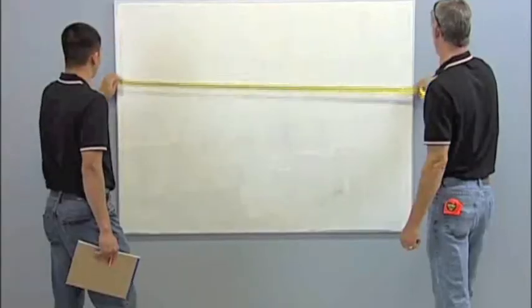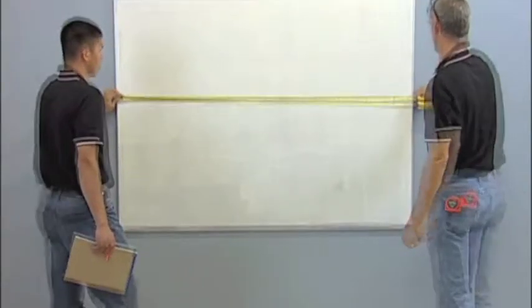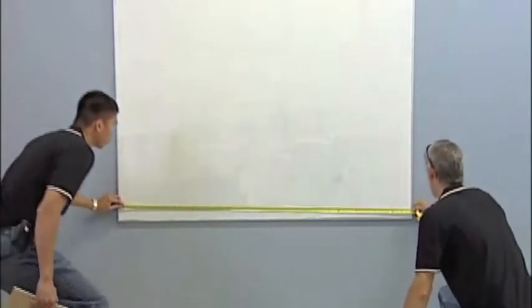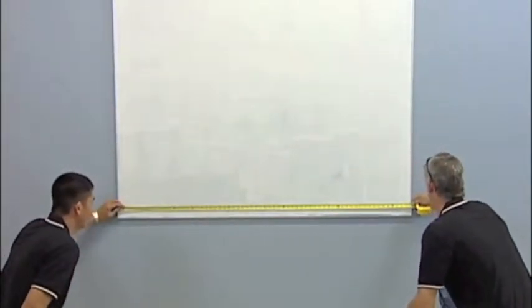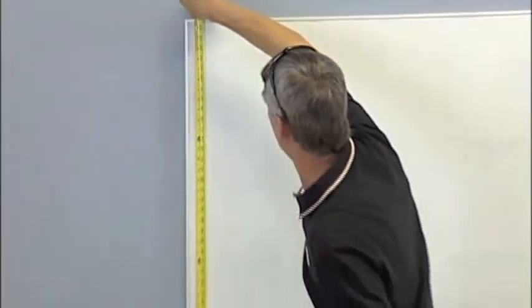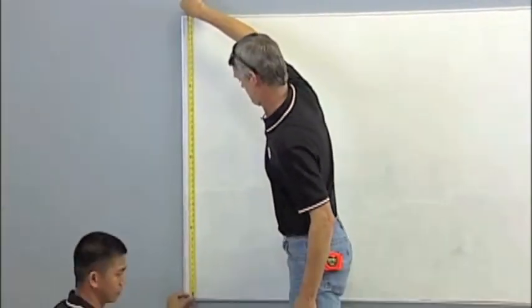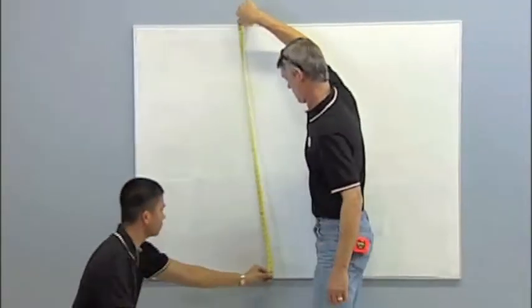It is important to measure carefully and check for square. Old chalkboard frames have had years of heavy use and may not be square. Carefully check for both horizontal and vertical square.